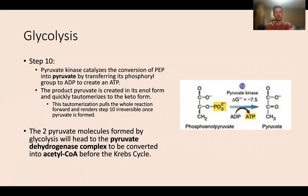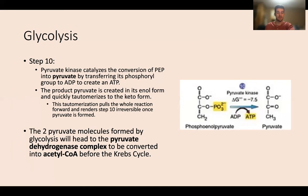In step ten, pyruvate kinase catalyzes the conversion of PEP into pyruvate by transferring its phosphoryl group to ADP to create ATP. We get rid of that phosphate group on PEP, transfer it to ADP, and create both pyruvate and an ATP molecule. Pyruvate is created in its enol form and quickly tautomerizes to the keto form — this tautomerization pulls the entire reaction forward and renders step ten irreversible. The two pyruvate molecules formed by glycolysis will head to the pyruvate dehydrogenase complex to be converted into acetyl-CoA before the Krebs cycle.